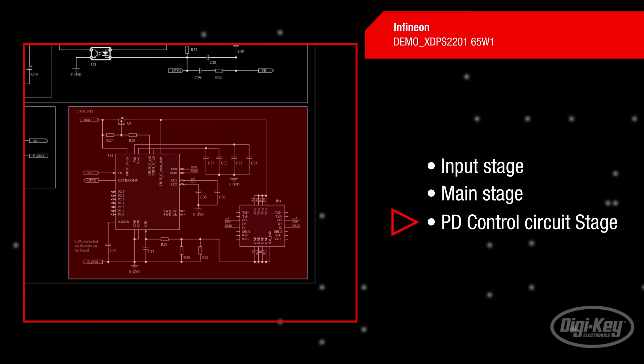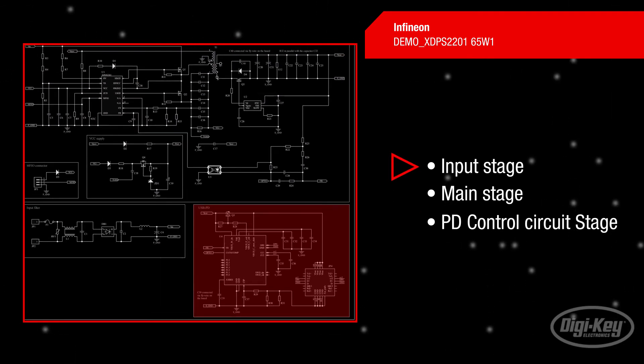The PD control circuit stage uses the CYPD3174 PD controller to sense the output voltage and generate a control signal that is transferred via an optocoupler to the primary side control for the output voltage regulation.